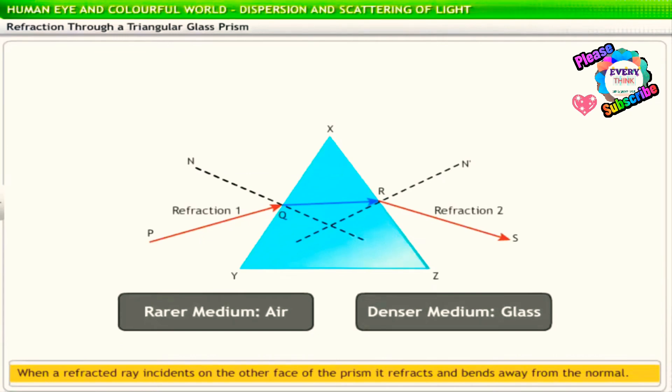Thus, a light ray refracts twice as it propagates through a triangular glass prism. The emergent ray always propagates towards the base of the prism.